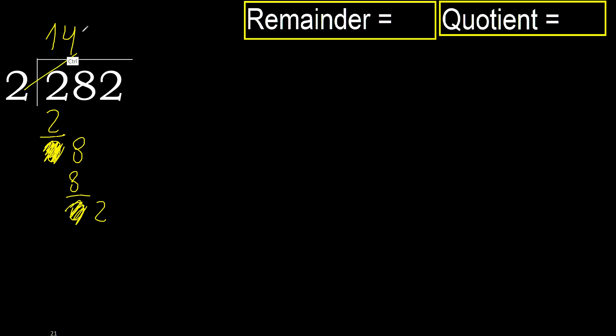2. 2 multiplied by 1 is 2, which is not greater. Ok, subtract. Next — that is not a number, therefore finish. 282 divided by 2 is 141.